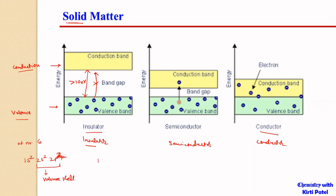For example, if we look at copper, its configuration is 1s2, 2s2, 2p6, 3s2, 3p6, 4s2, 3d9. So the valency shell will be 4s2 and 3d9.